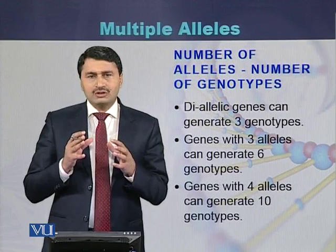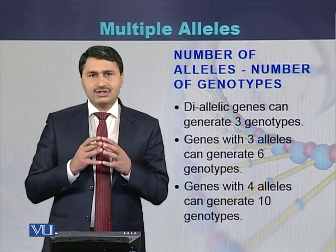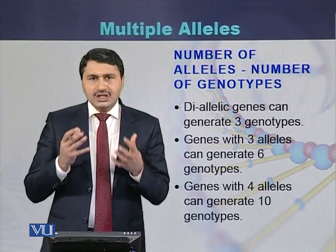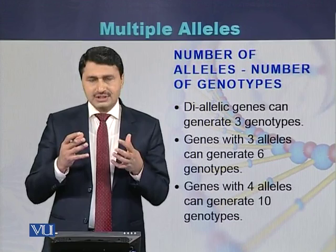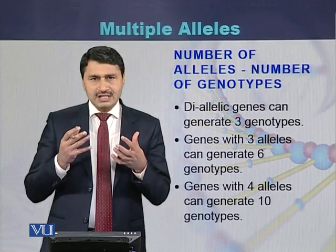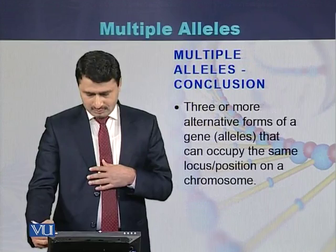Based on the number of alleles, the number of genotypes can be calculated. If a gene is diallelic with two alleles, it can generate three different genotypes. If a gene has three different alleles, it can generate six genotypes. If a gene has four different alleles, it can generate ten different genotypes.